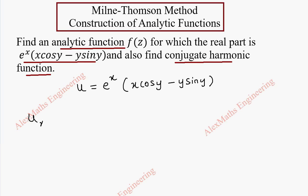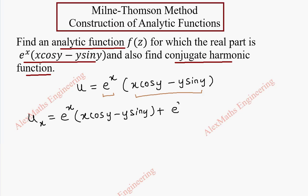Now we are going to find ux, which is the partial derivative with respect to x. We are going to follow the product rule — this is one term, this is another term. Differentiating the first term: e^x derivative is e^x and the next term is kept as it is. Plus first term is written as it is, and derivative of the second term: x derivative is 1 and cos(y) is a constant, so it stays; the y·sin(y) part is fully constant with respect to x so it is 0.